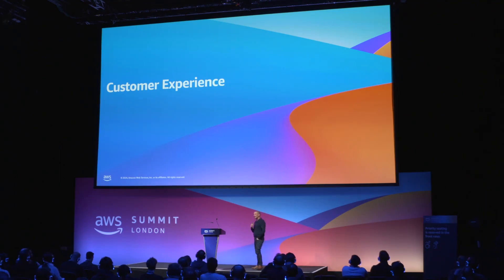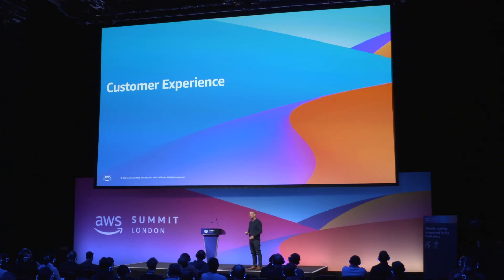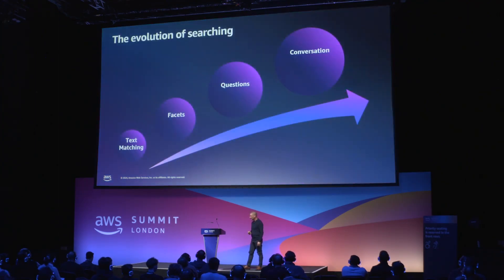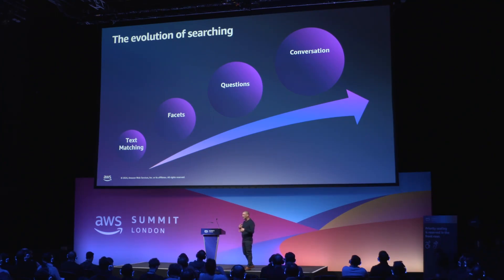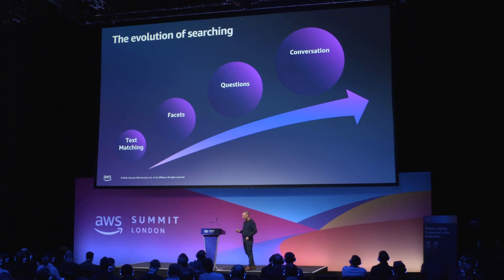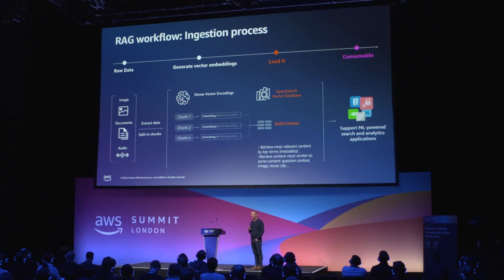One of the other areas for next steps in digital asset management is search, and customers are expecting a very different experience moving forward. When you think about the evolution of searching, we used to start with text-based matching, then we went to more facet-based search. Now Gen AI is really opening up the possibilities for us to become more conversational in how we search. What you're seeing is more and more RAG workflows.